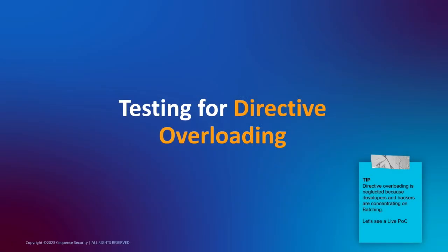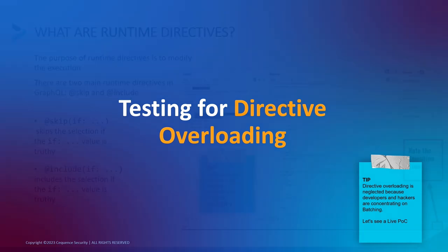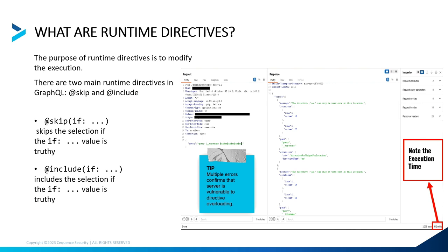Next is testing for directive overloading, which is a relatively new attack that people often miss because they are focused on batching. What are directives? Directives are like for loops or if loops — in GraphQL there are two main built-in directives: skip and include.